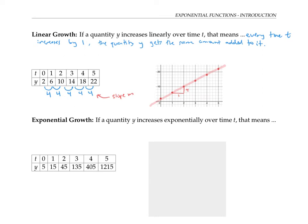In general, the equation for a linear relationship is y equals m t plus b, where m is the slope and b is the y-intercept — in other words, the value of y when t is zero. So for this particular line, we have y equals four t plus two, since the slope is four and the value of y when t is zero is two. The y-intercept can also be thought of as an initial value — the value when we start off at t equals zero.